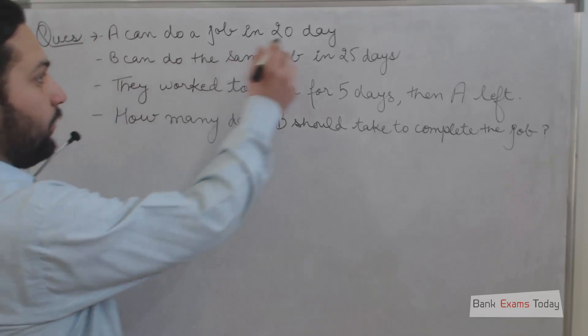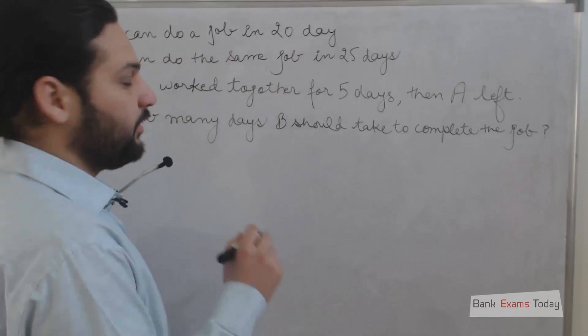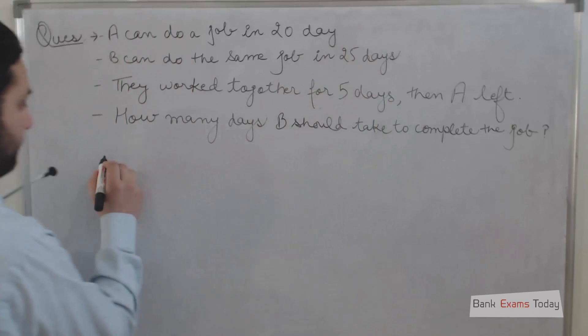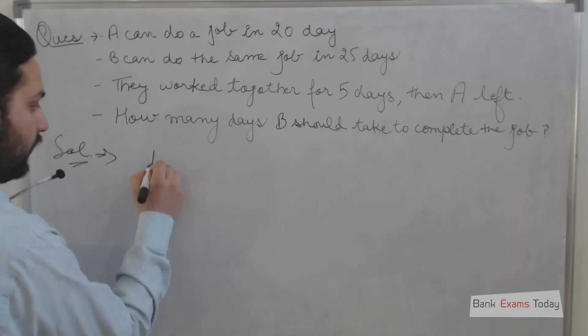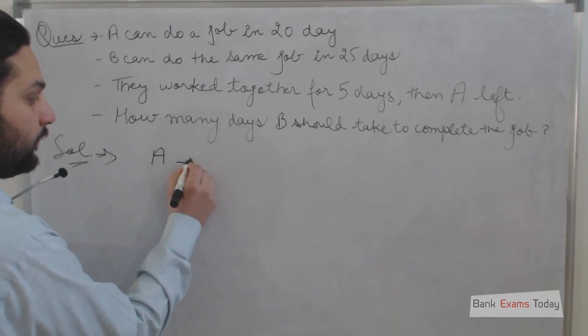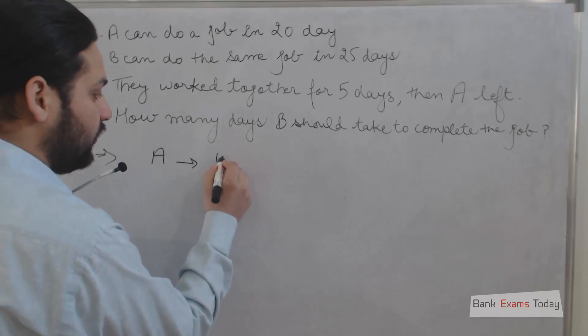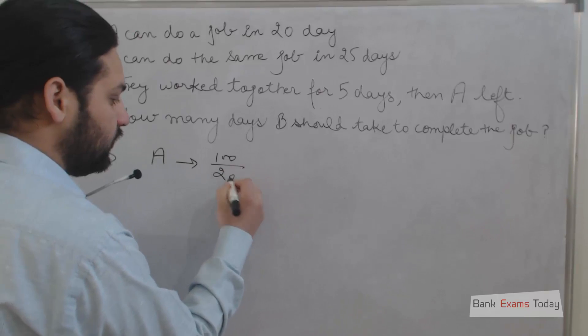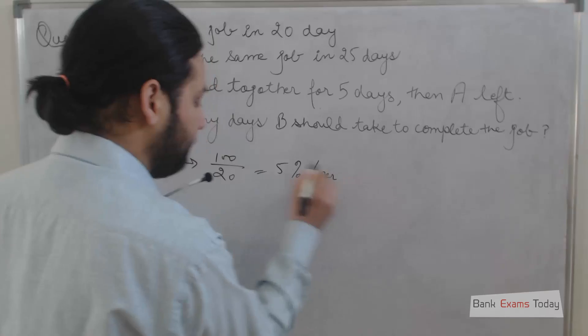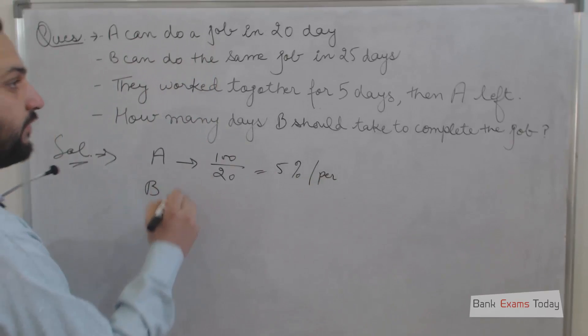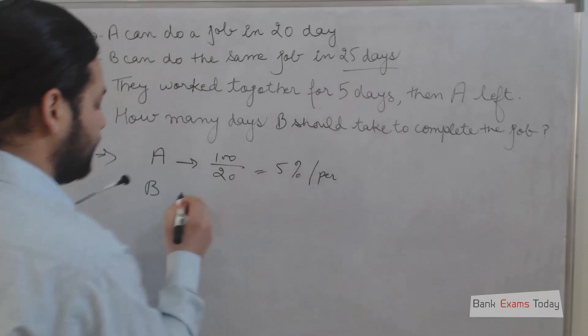A can do a job in 20 days, that means A can do 5% of the job in one day, or 5% of the job per day. B can do the job in 25 days, that means he can do 4% of the job per day.